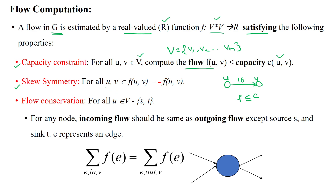The next constraint is skew symmetry: for all vertices u, v, f(u, v) equals minus f(v, u). This means if the capacity is 16 and the flow is 8, then in the opposite direction it will be represented as minus 8. So the flow is represented as f(u, v) equal to minus f(v, u) with respect to skew symmetry.